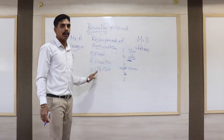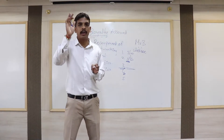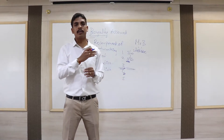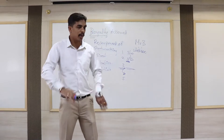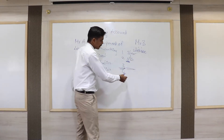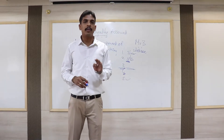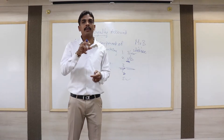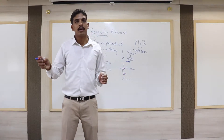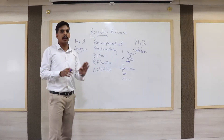In Lifetime Recoupment, it doesn't matter in which year you get a short working — any year's short working can be recovered from any year's surplus. There is no time limit and no fixed year in which you must recover the short working. For example, if you get a short working in the first year and there is a surplus in the fifth year, you can still recover it in the fifth year. These are the three methods of recoupment of short working.